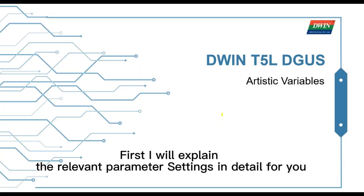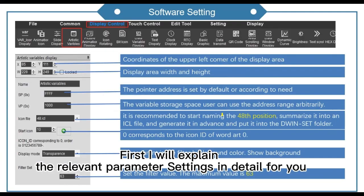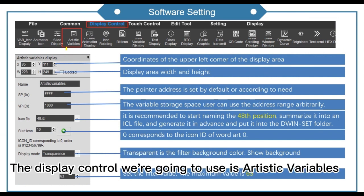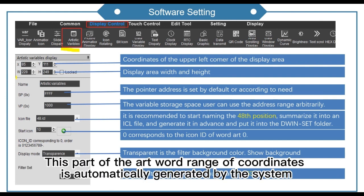First, I will explain the relevant parameter settings in detail for you. The display control we are going to use is artistic variables. This part of the outward range of coordinates is automatically generated by the system.